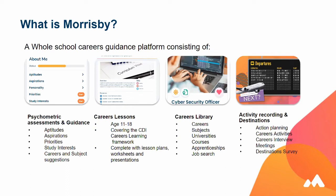The first thing that students would do is the About Me section, which covers the psychometric assessments and guidance. The aptitude, study interests, and priorities questionnaires are done. The priorities and study interests can be done at any age really, but the other two psychometric tests — the aspirations and aptitude — are the main psychometric testing, which includes personality testing as well.